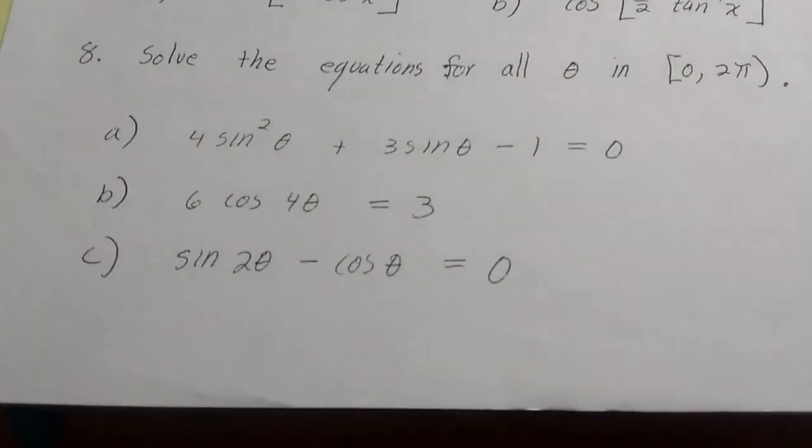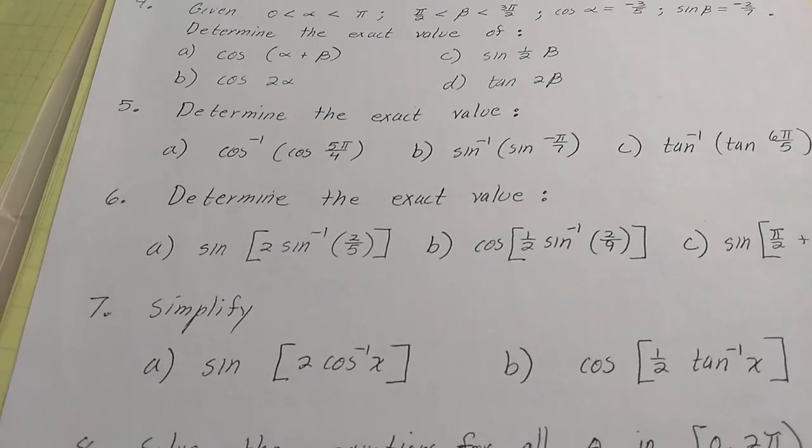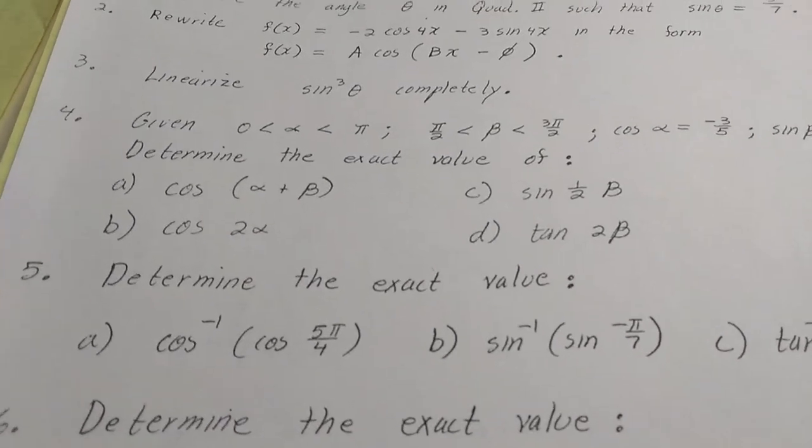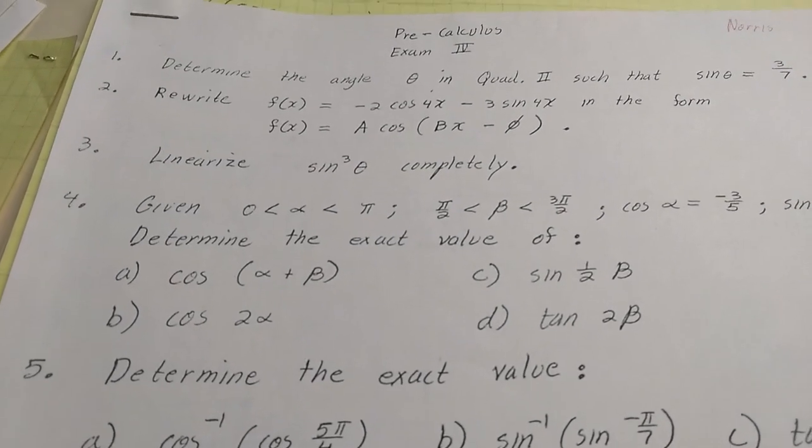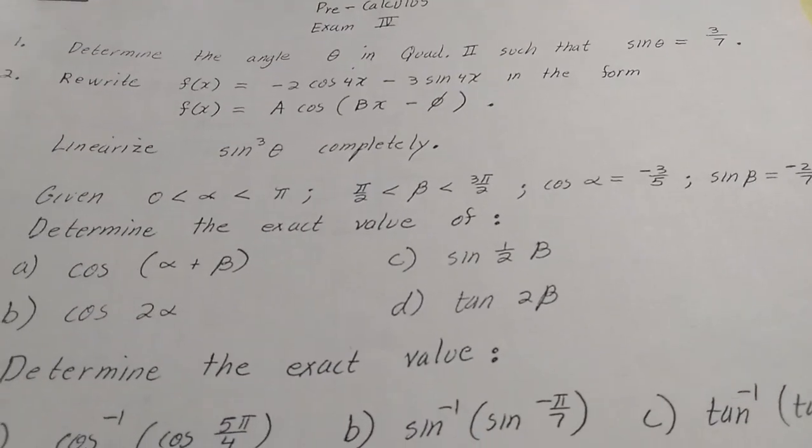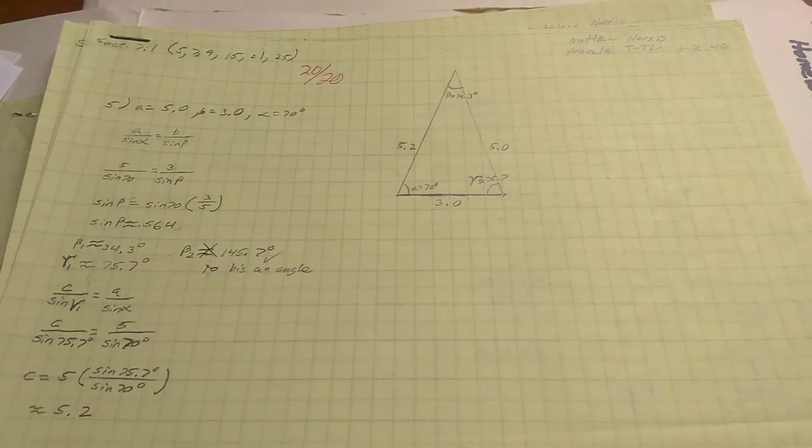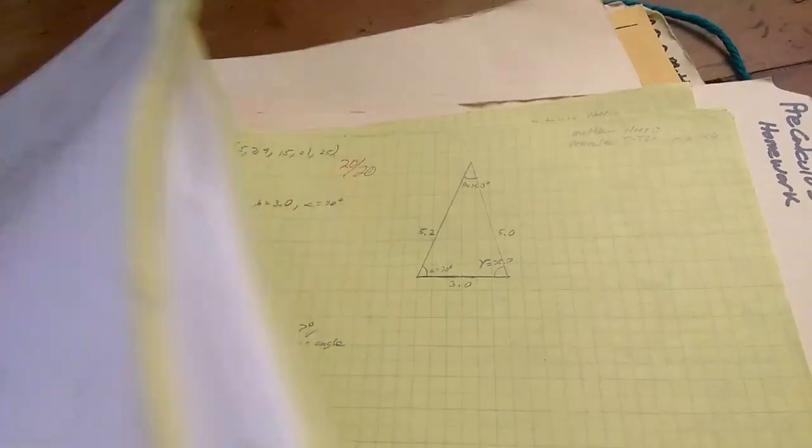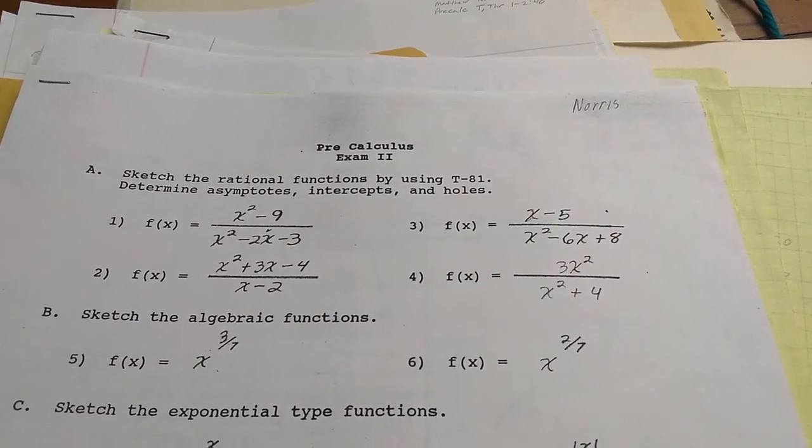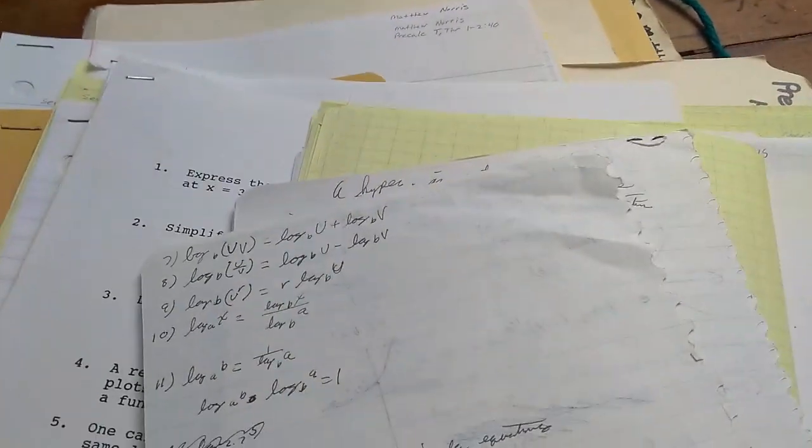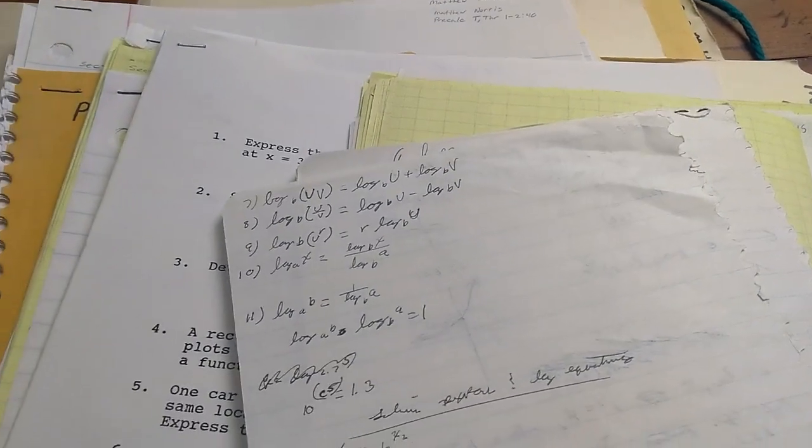Determine the angle theta in quadrant two such that sine of theta is 3 over 7. Then we have some other questions here. This is interesting. It's pre-calculus and they're doing trig. I guess back then they did trig in the pre-calculus course. There was no trig course. Pre-calculus was just like pre-calculus and trig, both combined.